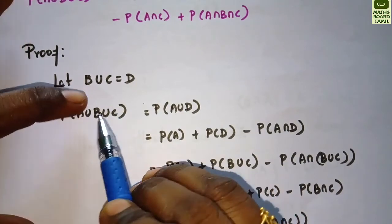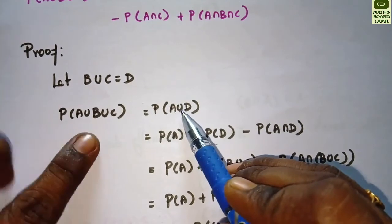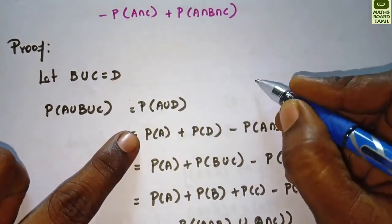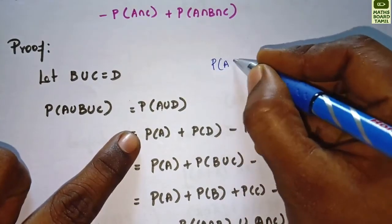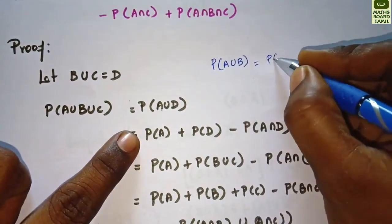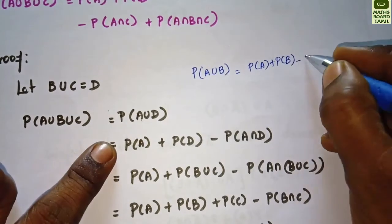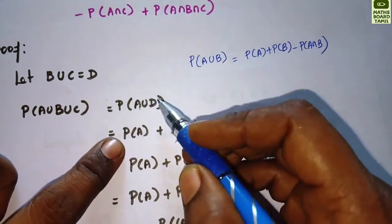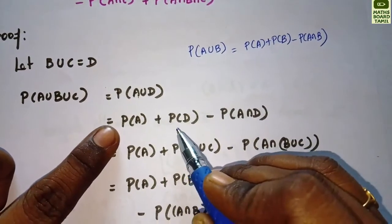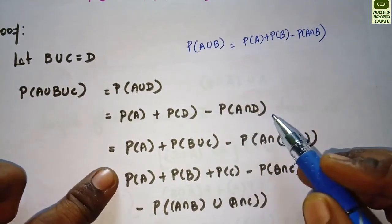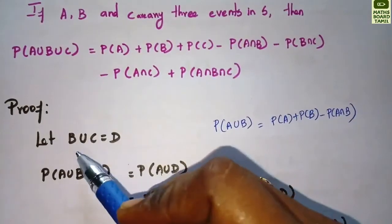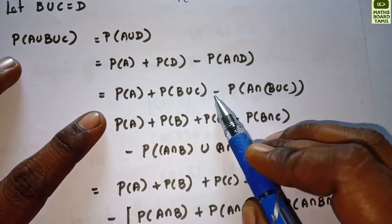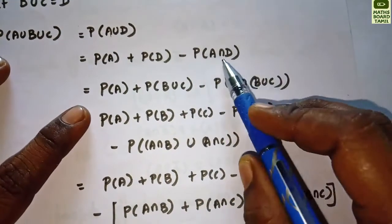We apply the two-event formula: probability of A union D equals probability of A plus probability of D minus probability of A intersection D. We then replace D with B union C, giving: probability of A plus probability of B union C minus probability of A intersection (B union C).